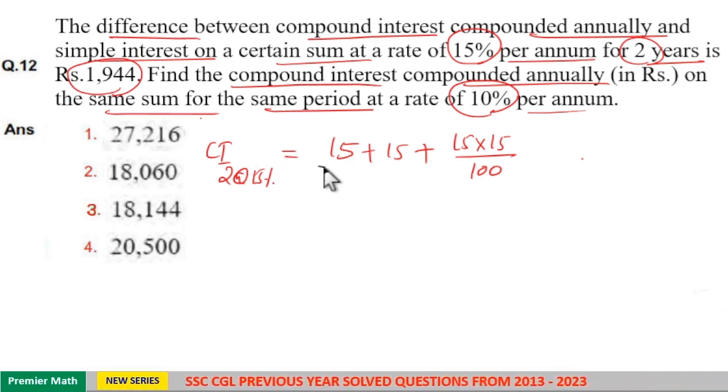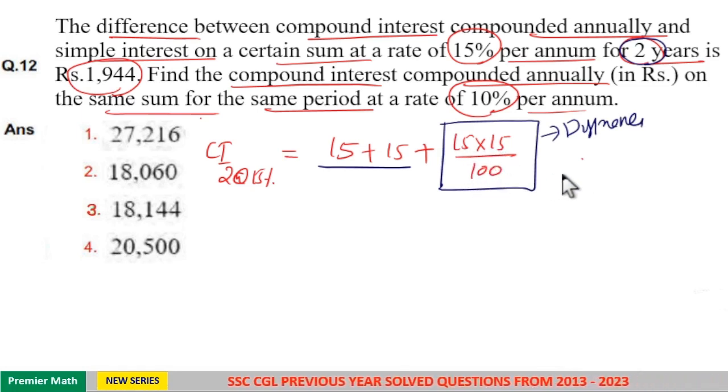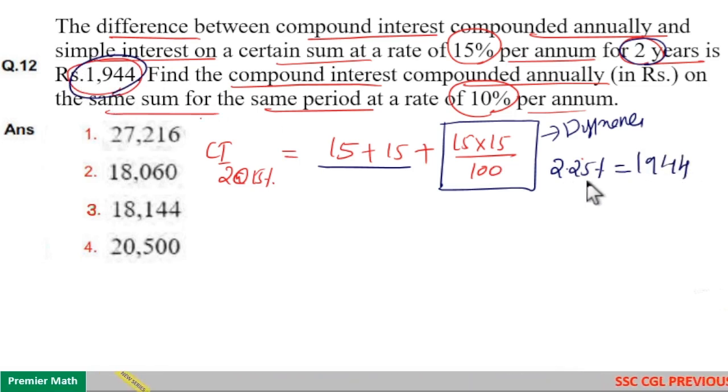Now you can see simple interest means 15 plus 15, 30 percentage is the simple interest for 2 years. Now the remaining is the difference between compound interest and simple interest, that is 225 by 100 means 2.25 percentage. So here difference is given as 1944.